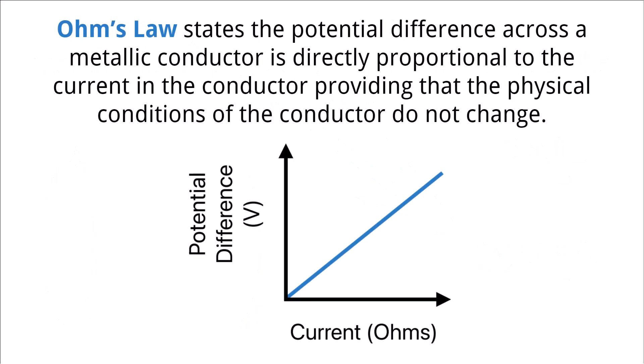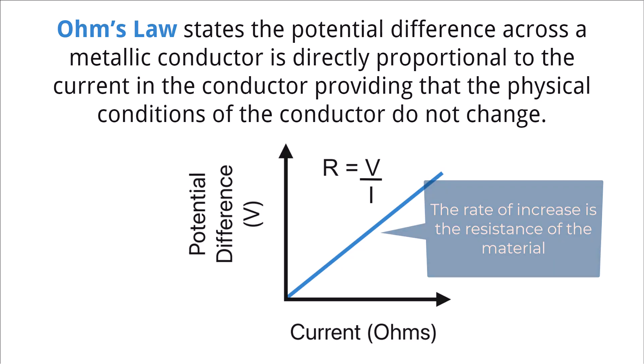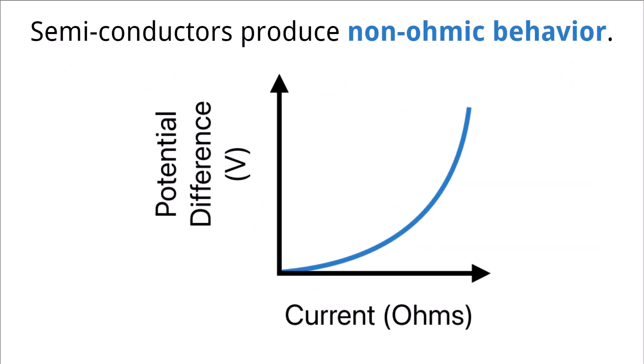Conductive materials show a relationship between the potential difference and the current. As the current is increased in a conductor, the potential difference increases at a linear rate. That rate of increase is the resistance of the conductive material. These types of materials are called ohmic conductors. We see this ohmic conductor relationship in materials like wires. However, not all materials follow Ohm's law.